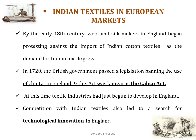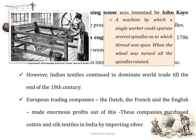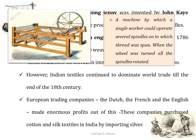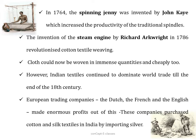One such technological innovation was the spinning jenny in 1764, invented by John Kay, which increased the productivity of traditional spindles. The spinning jenny was a machine by which a single worker could operate several spindles — when the wheel was turned, all the spindles rotated. The invention of the steam engine by Richard Arkwright in 1786 also revolutionized cotton textile weaving. Because of all these technological innovations, cloth was now woven very easily, in immense quantities, and cheaply too.